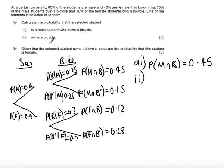Part two: probability that they own a bicycle. There's two scenarios where they could own a bicycle - it's either that they're male and own a bicycle or they're female and own a bicycle. So the probability of owning a bicycle will be 0.45 plus 0.12 because they're mutually exclusive events, can't be male and female at the same time, so we get an answer of 0.57.